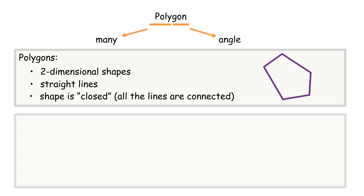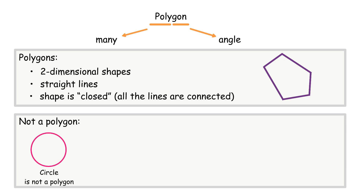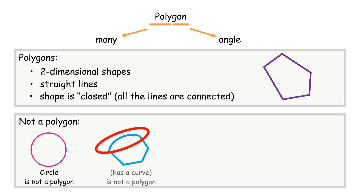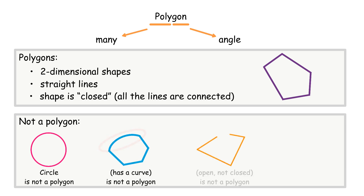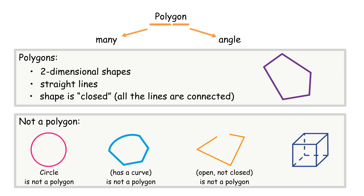There are some characteristics of what is not a polygon: a circle is not a polygon; any shape with a curve is not a polygon; an open, not closed shape is not a polygon; and a three-dimensional shape is not a polygon.